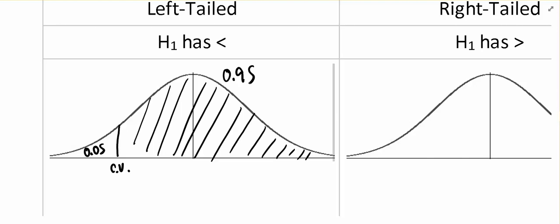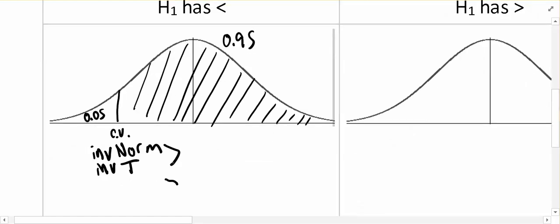So to find that value, that critical value, we're going to use either inverse norm or inverse t, depending on which distribution we're using. And either way we go about it, the area to the left is 0.05. So in general, it's your significance that's going to be to the left on a left-tailed test.